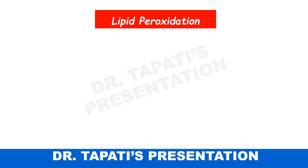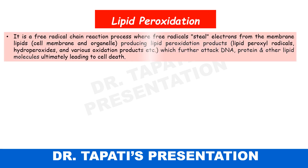ROS elements can also attack lipid molecules, a process known as lipid peroxidation. It is a free radical chain reaction where free radicals steal electrons from membrane lipids — either a cell membrane or organelle membrane — producing lipid peroxidation products which further attack DNA, protein, and other lipid molecules, ultimately leading to cell death.